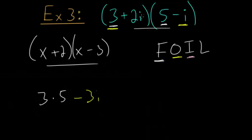And then we have the inner ones, so that's 2i and 5, so those multiply together to give us plus 10i. And finally we have the last terms, so that's the 2i and the minus i, so that would give us minus 2i squared.